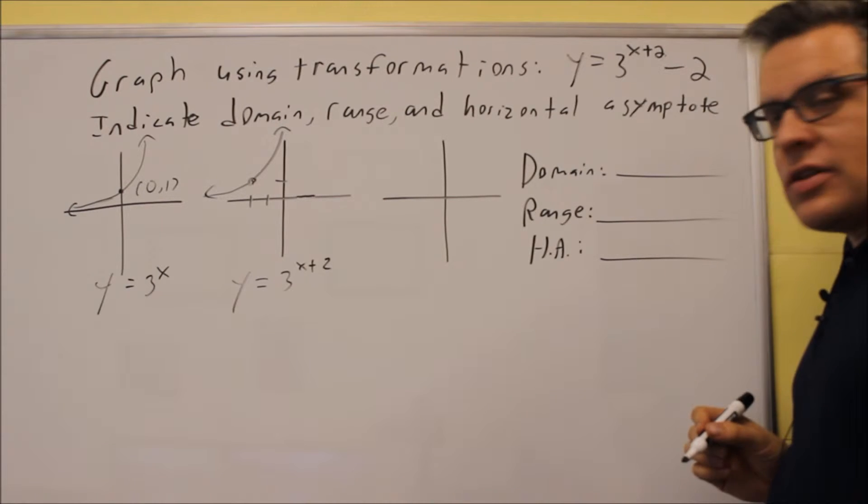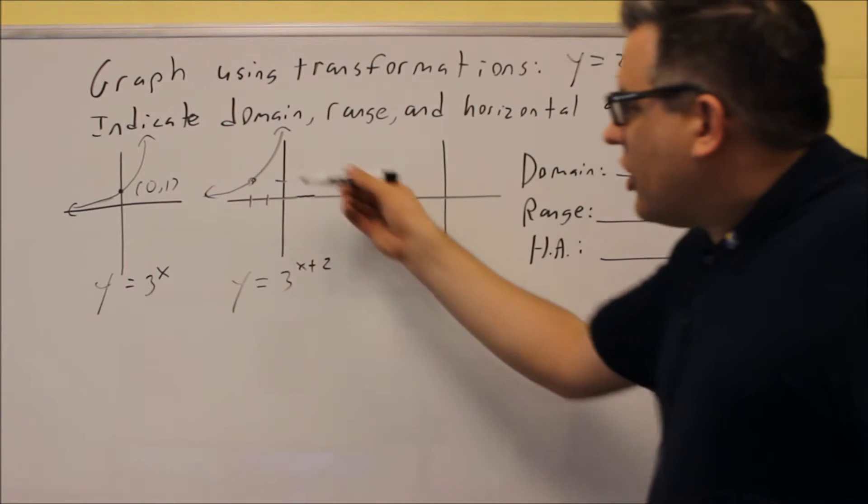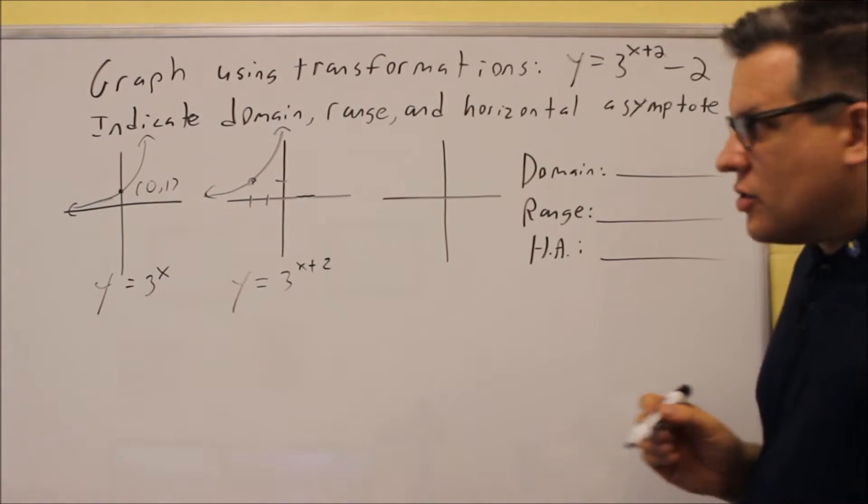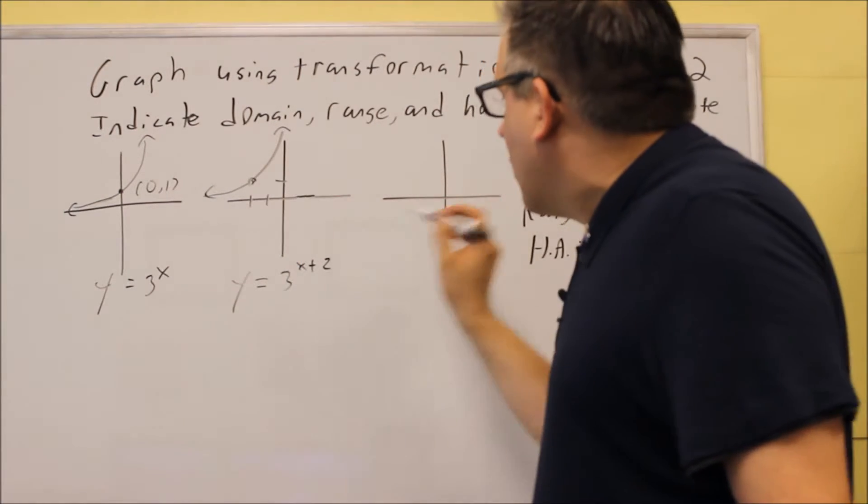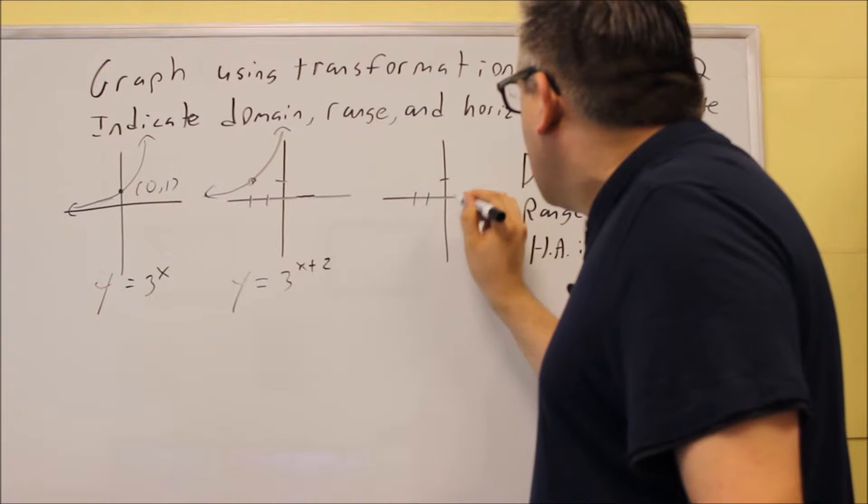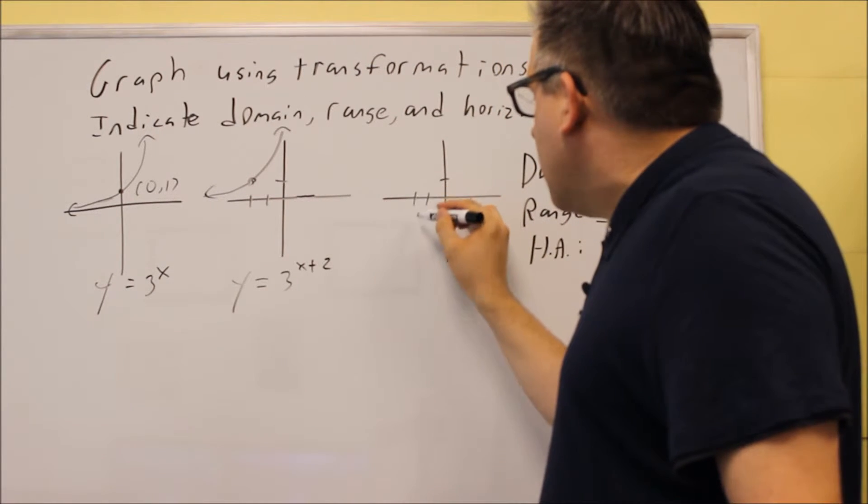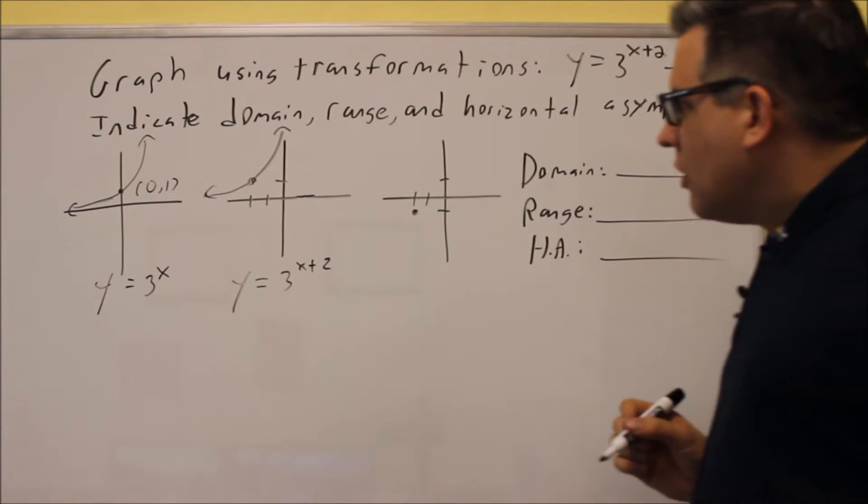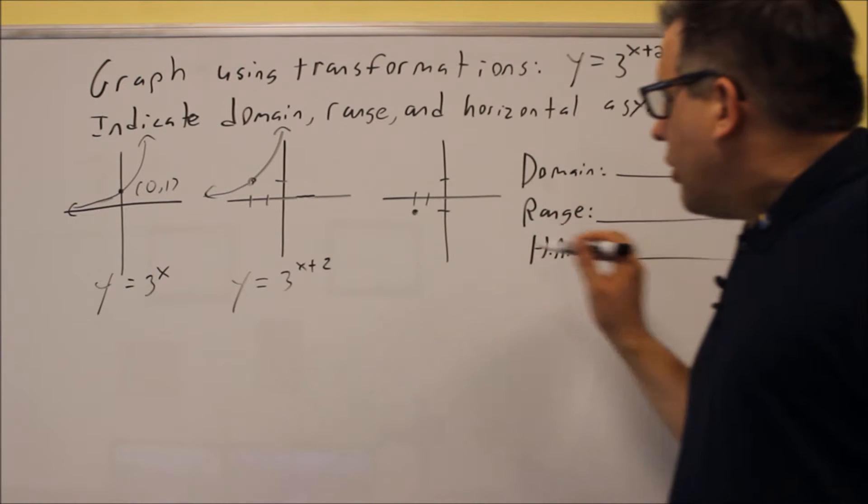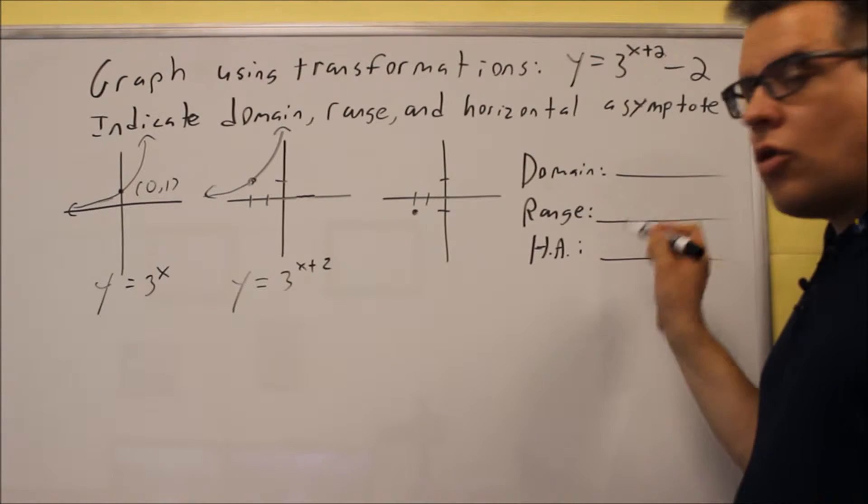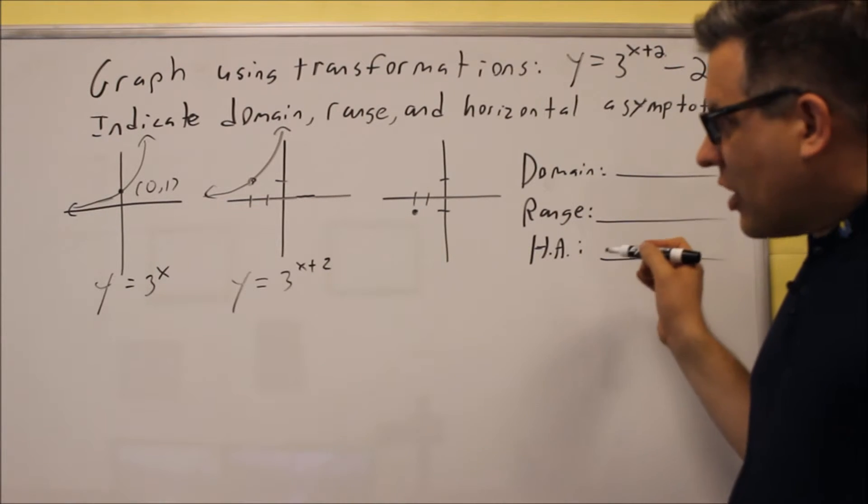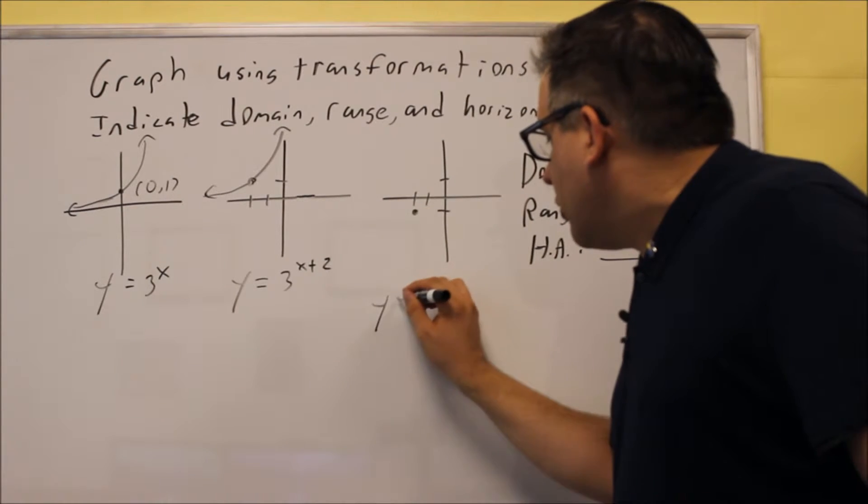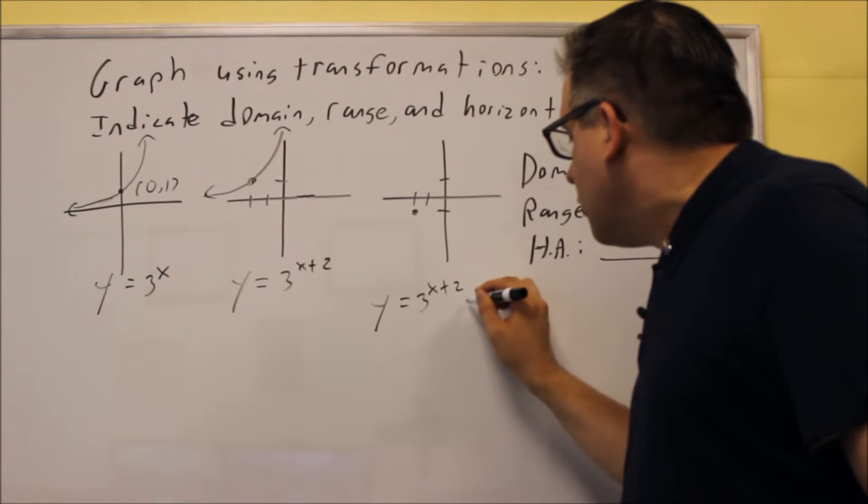But now I've got a minus 2 that's there, what that'll do is it'll take this graph that's drawn in this position and it's going to shift the whole graph down two places. So this point that we have here, that's also going to shift down two units. So it goes down 1 and down 2 to here. So then what we have is the graph will be drawn down there. Now part of this question asks us for horizontal asymptote. Let's actually do that because that's going to help us to decide where our final graph is going to end up.